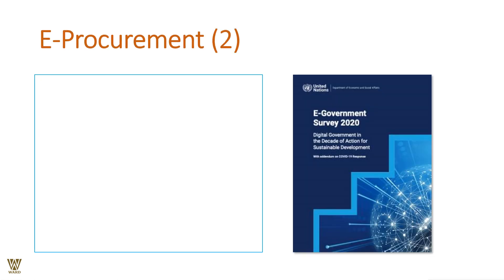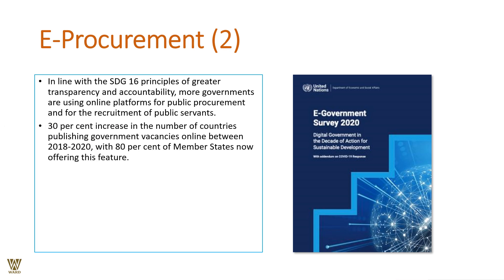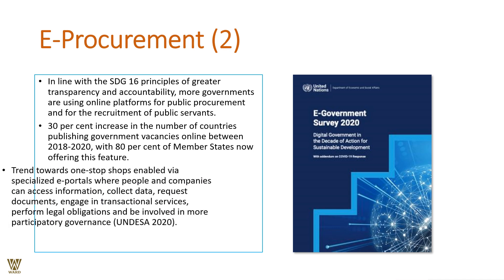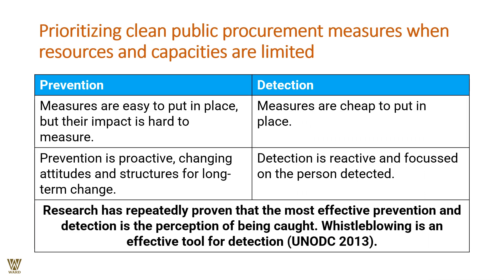Under SDG 16 principles, e-procurement mandates greater transparency, greater accountability, and more use of online platforms for public procurement. There has been a 30 percent increase in the number of countries publishing government vacancies online from 2018 to 2020. Trends point toward one-stop-shop e-portals where companies, vendors, and bidders can access information, collect data, request documents, engage in transactional services, perform legal obligations, and more.